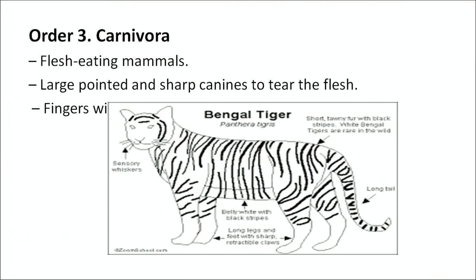The third order is Carnivora — these are flesh-eating mammals. They have large, pointed, sharp canines to tear flesh. Fingers are present with sharp claws. Examples: lion, tiger, cat, and dog.